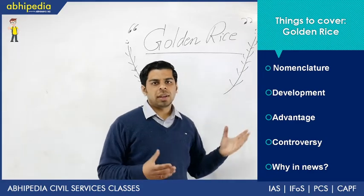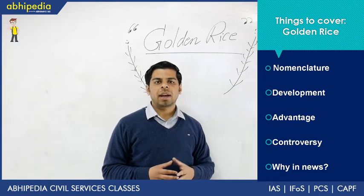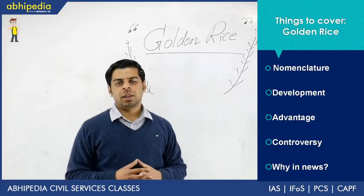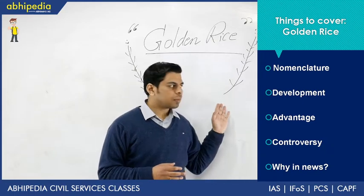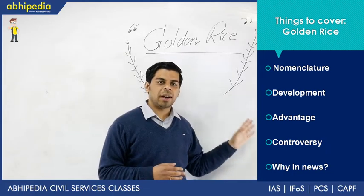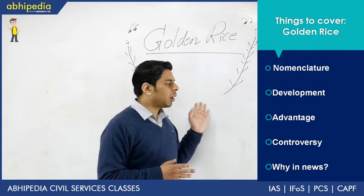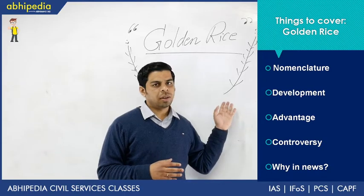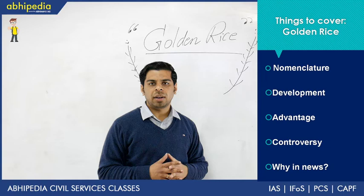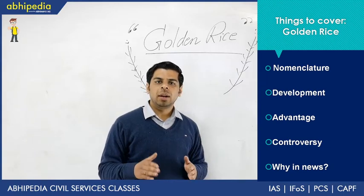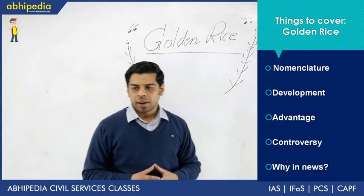Coming back to the topic: Golden Rice has been approved only in the US and Canada, which are not party to the Cartagena Protocol. The majority of the world still views it with suspicion — concerns about monopolizing tendencies and no one wants to play with the world food market. However, currently in 2020, one country has taken a bold decision — the Philippines. Their regulator has given a green signal for cultivation; field trials have cleared and no serious controversies were highlighted. This is why Golden Rice is currently in news.